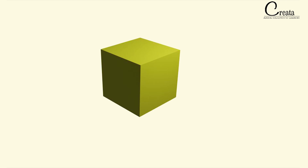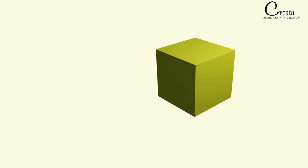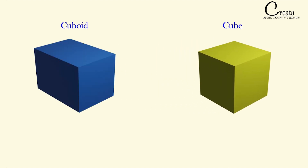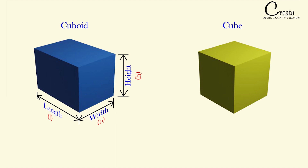We have done with the surface area and volume of a cuboid. Let's move to the next 3D shape — the cube. Cube and cuboid are similar to each other. A cube is a type of cuboid in which all the dimensions are the same — that is, length, width, and height are all equal. Let's assume L, B, and H are all equal to A, so length, width, and height are all A.